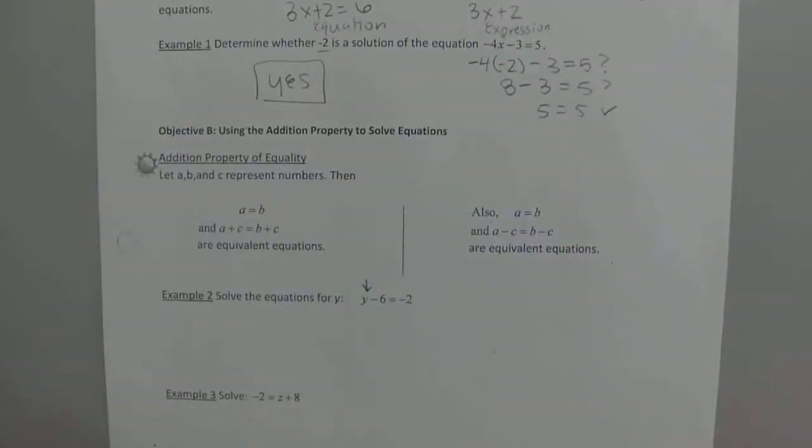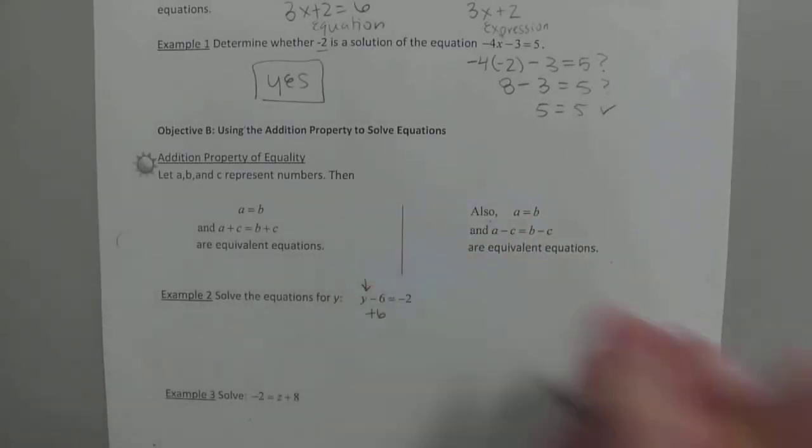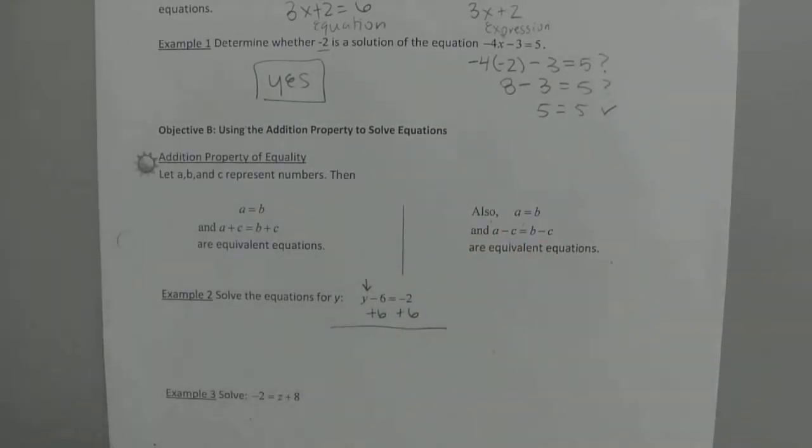So always just do the opposite. If we want to get y by itself, what are we going to do to both sides? Plus 6. Plus 6, right? So it's opposite. Like there's already a negative 6 there. So if you say, how do I get rid of a negative 6? Well, let's just add 6 to it. But if you add 6 to the left, you just got to make sure you add 6 to the right.